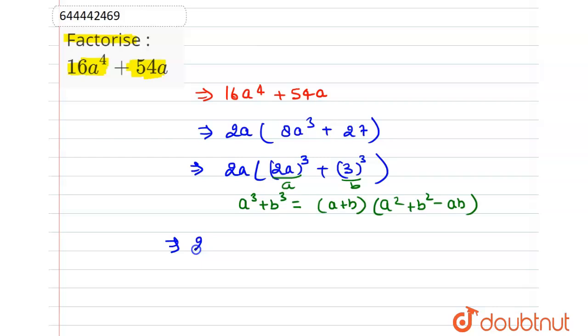So we will have now 2a. Now we can write this 2a cube plus 3 cube as a plus b, a square plus b square minus ab. So here a is 2a.